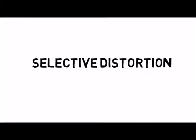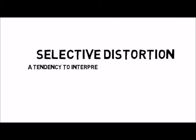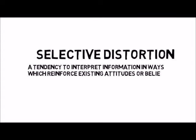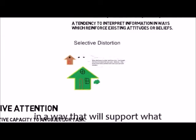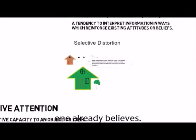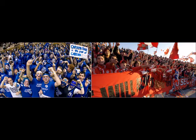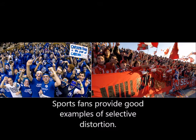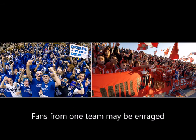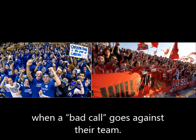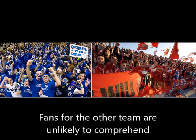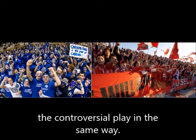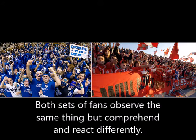Selective distortion is a tendency to interpret information in ways which reinforce existing attitudes or beliefs — a tendency to interpret information in a way that will support what one already believes. For example, sports fans provide good examples of selective distortion. Fans from one team may be enraged when a bad call goes against their team, while fans for the other team are unlikely to comprehend the controversial play in the same way. Both sets of fans observe the same thing but comprehend and react differently.